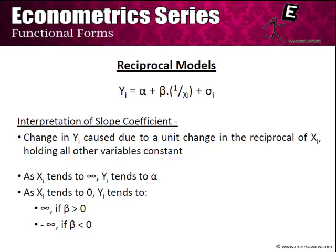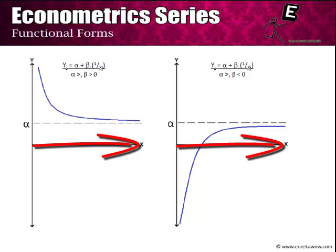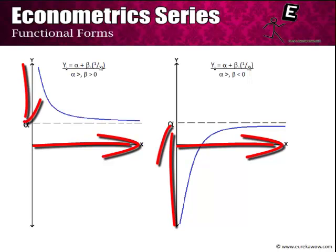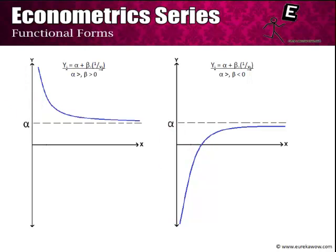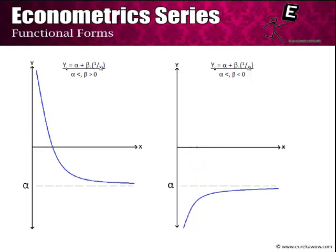With xi assumed positive, there are four graph types to consider. When α > 0 and β > 0, the curve starts from y = +∞ and descends to the asymptote α. When α > 0 and β < 0, the curve starts from y = −∞ and rises up to α. Similarly with α < 0: if β > 0 the curve descends to the negative value α, and if β < 0 the curve rises up to α.